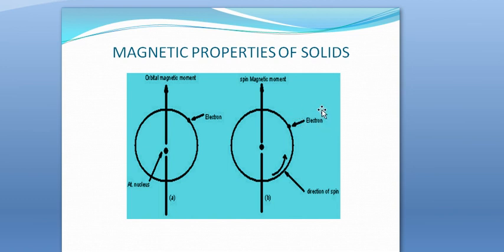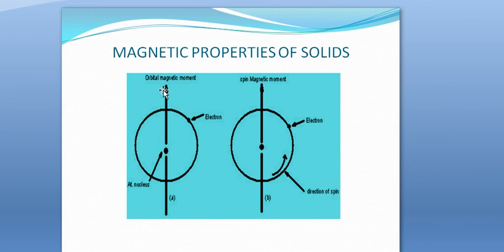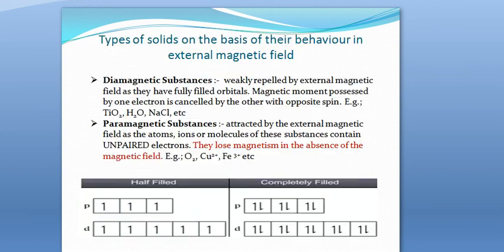Thus we can say that an electron itself behaves as a small magnet. The magnetic properties of solids arise because an electron, which is an essential part of an atom, is itself a tiny magnet. We use arrows to represent the orbital magnetic moment and spin magnetic moment. Since magnetic moment is a vector quantity, it has both magnitude and direction, so we assign a specific direction to each.